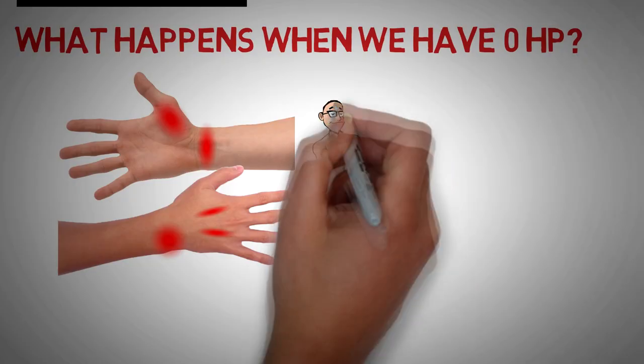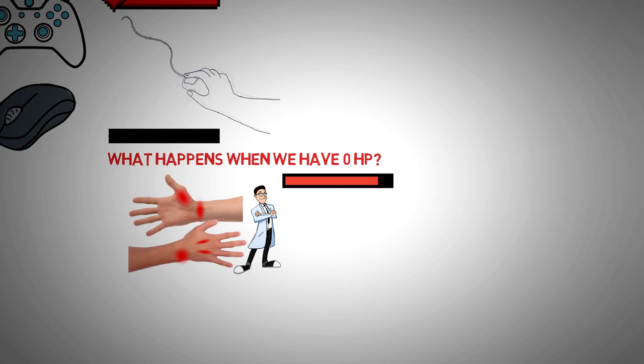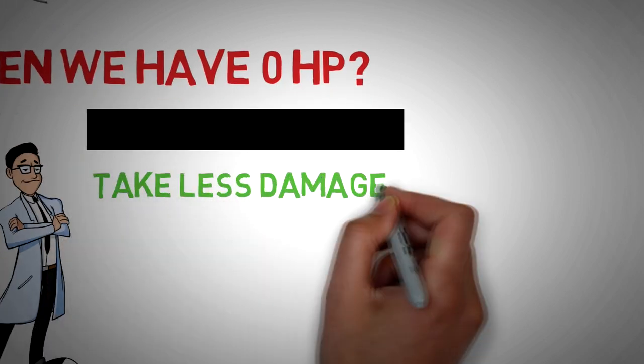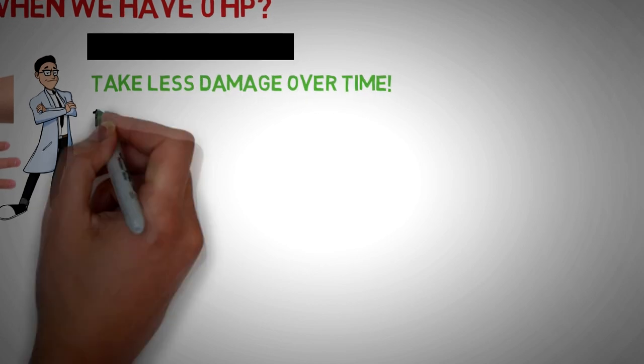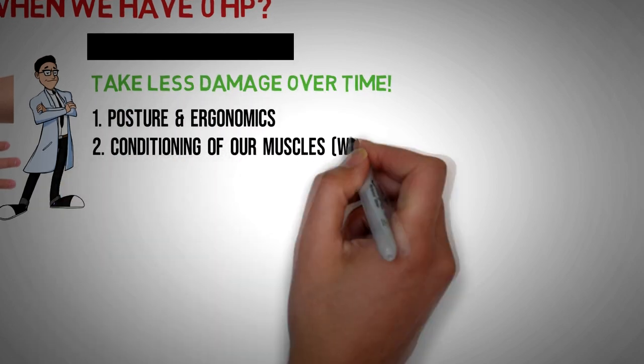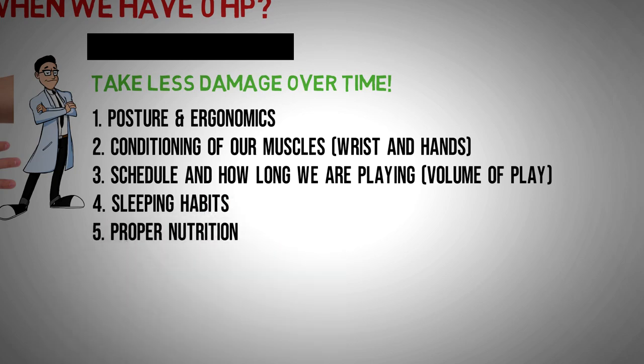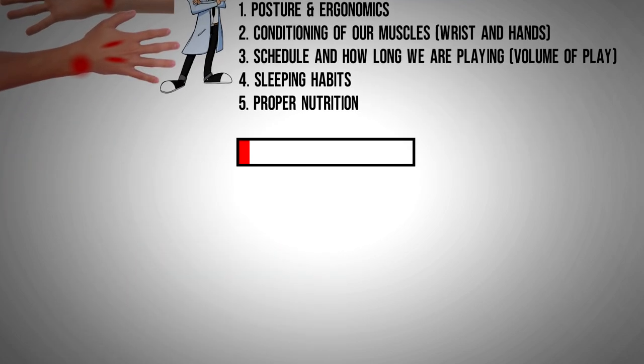Fortunately, there are things we can do to lose less HP with each click or lose HP more slowly. You can think of it as taking less damage. So instead of losing 4 points of HP, we only lose 1 with each click. We can do that by having good posture, ergonomics, paying attention to our schedule, sleeping well, and even eating a more healthy diet. These can all influence how quickly our HP reduces.